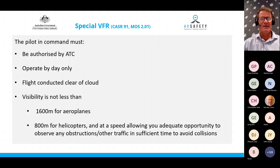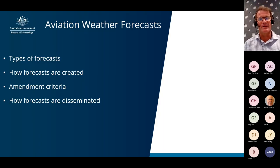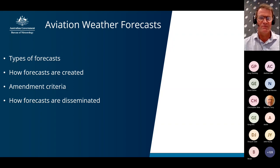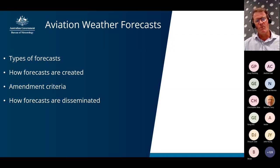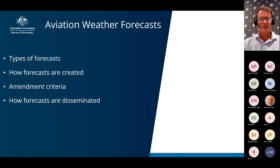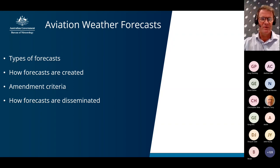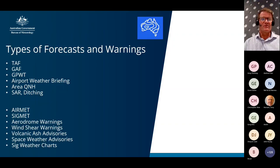Thanks very much, Rob. My job today is to talk about what types of forecasts the Bureau sends out, secondly how we create our forecasts, thirdly what changes in forecast conditions trigger an amendment, and lastly how we disseminate our forecasts. Just a quick reminder that in this webinar we're going through the types of forecasts; in subsequent webinars we'll look at how to read and interpret those forecasts.